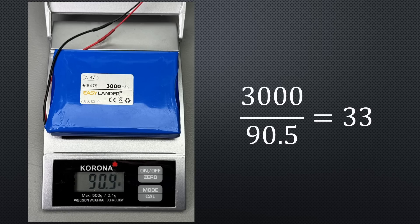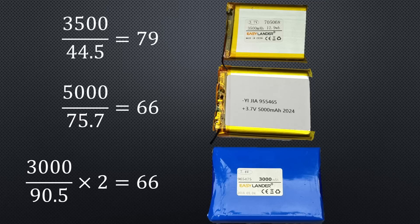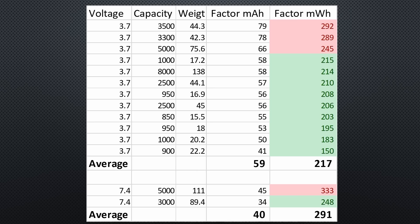This battery has a factor of only 33, very low. But wait, it is 7.4 instead of 3.7V. To compare it fairly with 3.7V batteries, we must multiply its factor by 2. Alternatively, we can use mWh instead of mAh for comparisons. I compiled a table with factors based on mAh and mWh for some batteries in my lab.